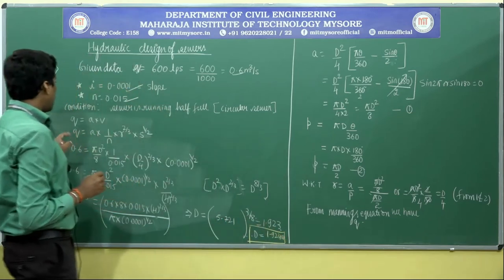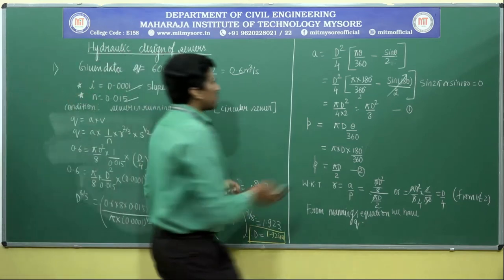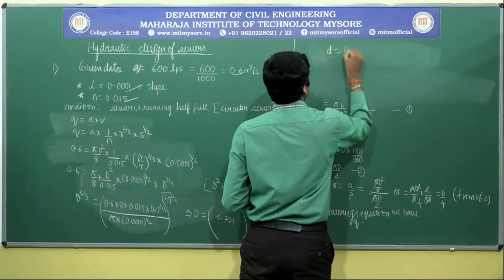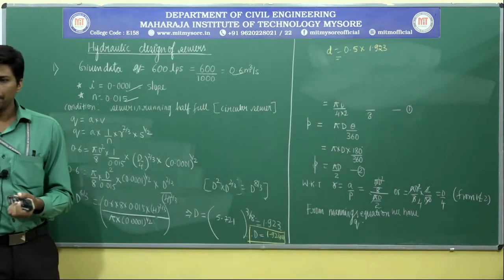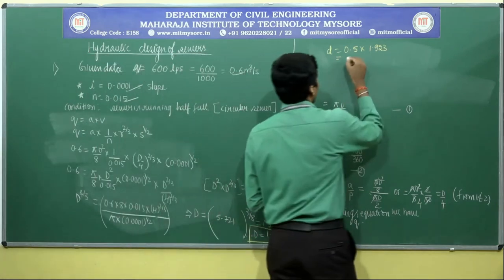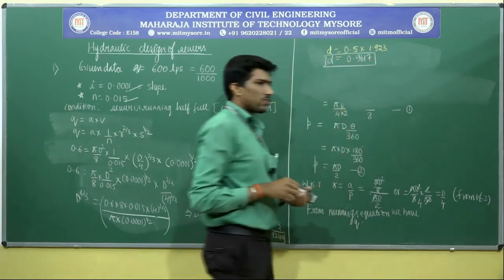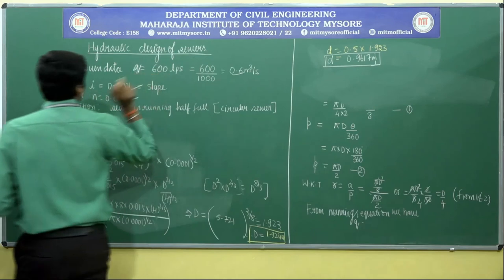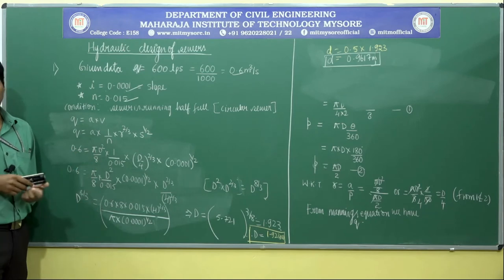Since the sewer runs half full, the depth of flow is d = 0.5 × 1.923 = 0.9617 m. This is the depth at which the sewer operates under the half-full condition. This completes the alternative method for determining the sewer parameters, which is an important approach for solving such problems.